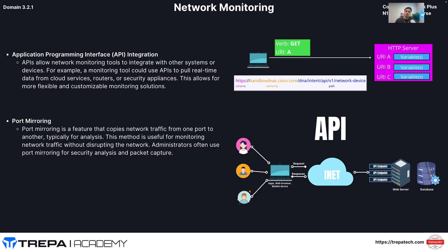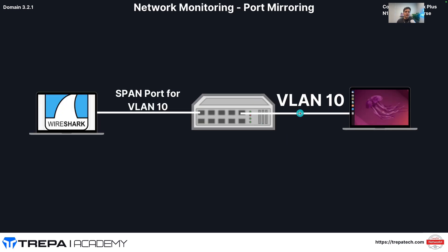Port mirroring is a feature that copies network traffic from one port to another in bulk — we call this SPAN. There are three ways to deploy it: local SPAN on a single switch, remote SPAN between switches, and ERSPAN, which sends SPAN information over a GRE tunnel via layer three. For example, if we have a user on VLAN 10 and want a complete packet capture, we can set up SPAN to duplicate traffic from one port to another, and then run Wireshark to investigate what data is coming across that interface.